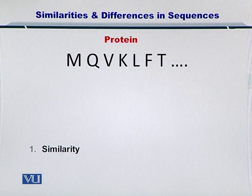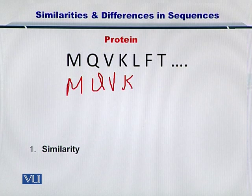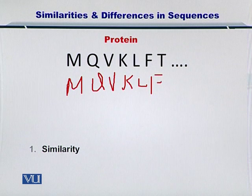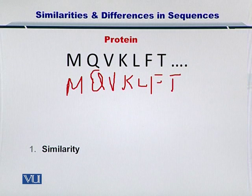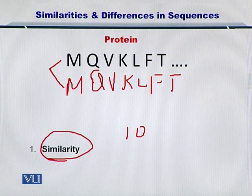So if you have another protein sequence — M, Q, V, A, L, F, and T — then you can obviously say that in terms of similarity, these two sequences are 100% similar.